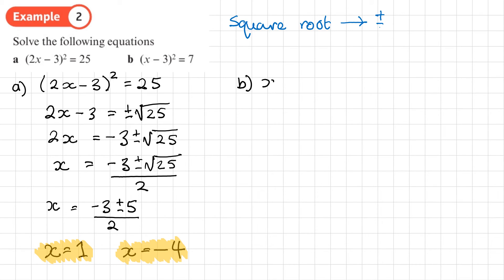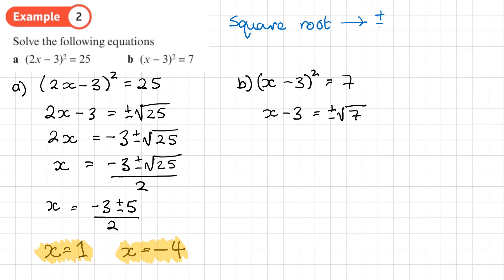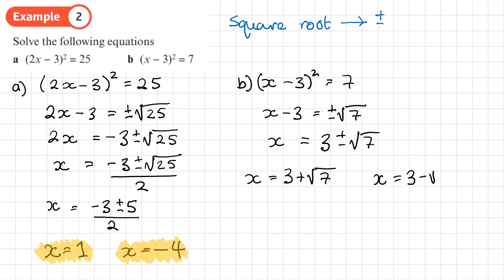Part B: (x − 3) squared equals 7. Square rooting both sides: x minus 3 equals plus or minus root 7. The square root of 7 is irrational, so I leave it as root 7. Adding 3 to both sides: x equals 3 plus or minus root 7. So x equals 3 plus root 7, or x equals 3 minus root 7. You should now be able to do exercise 2a on page 20 of the textbook.